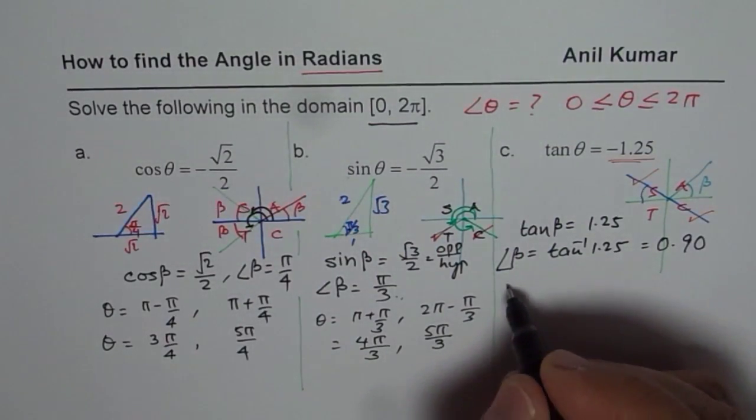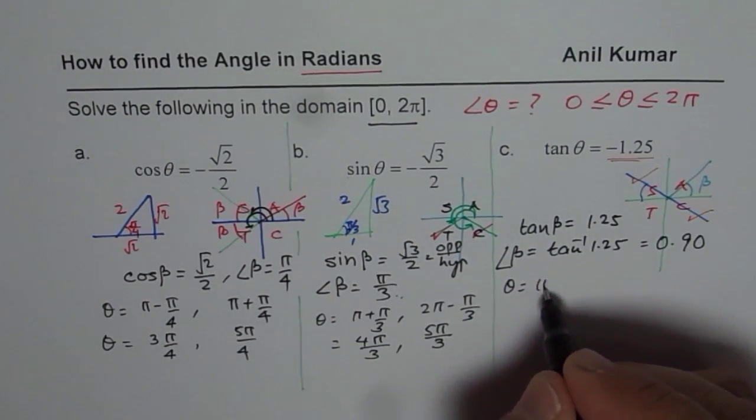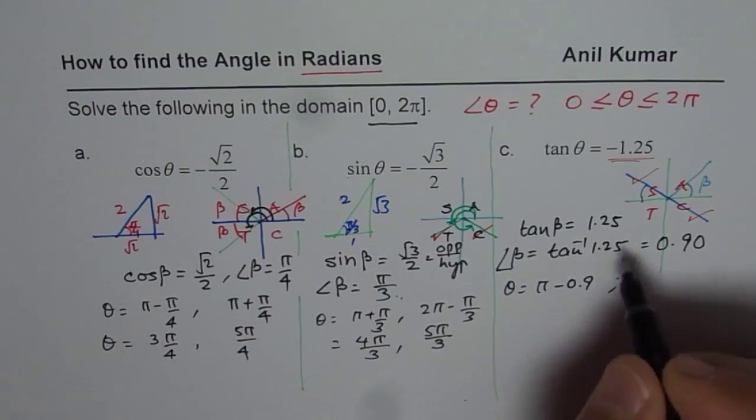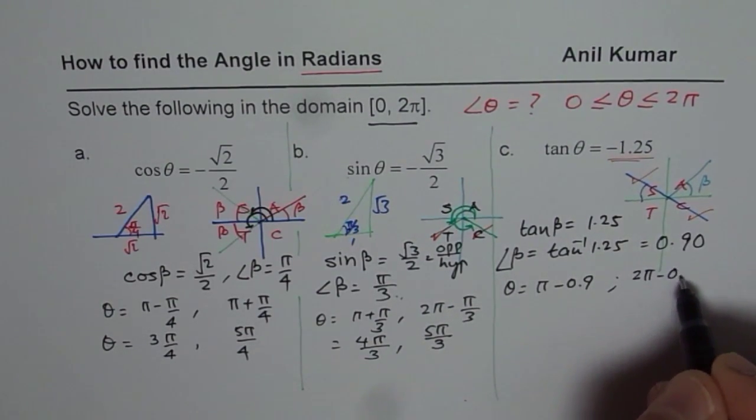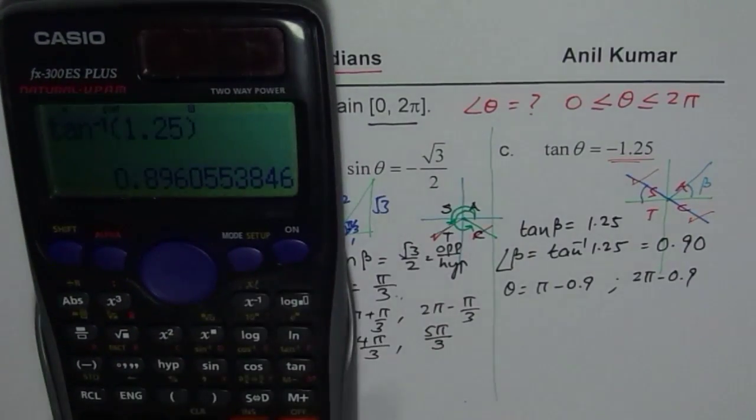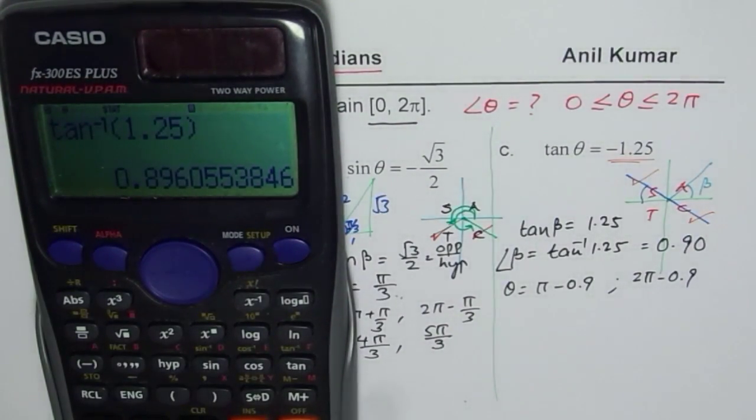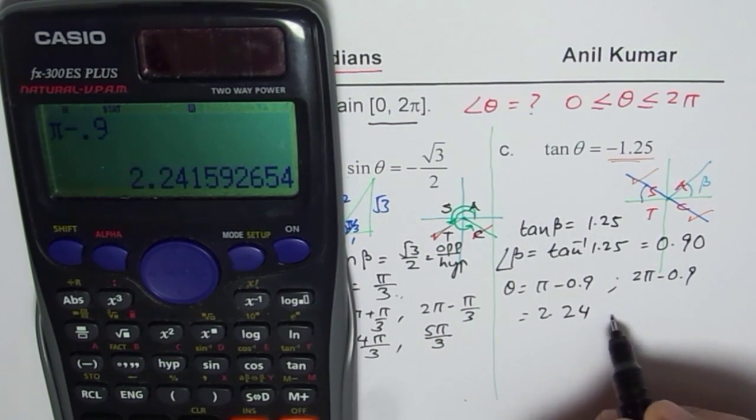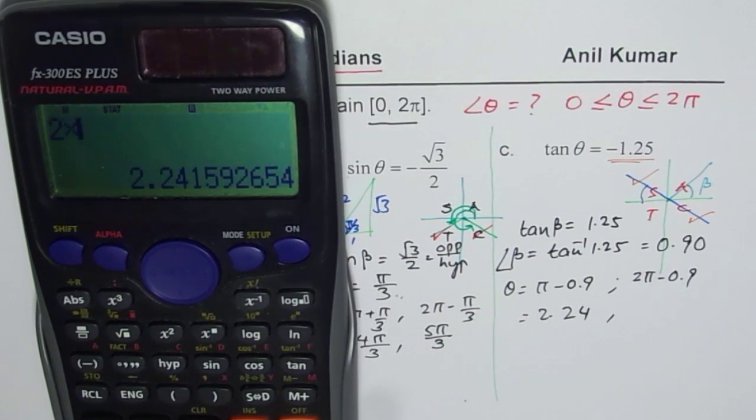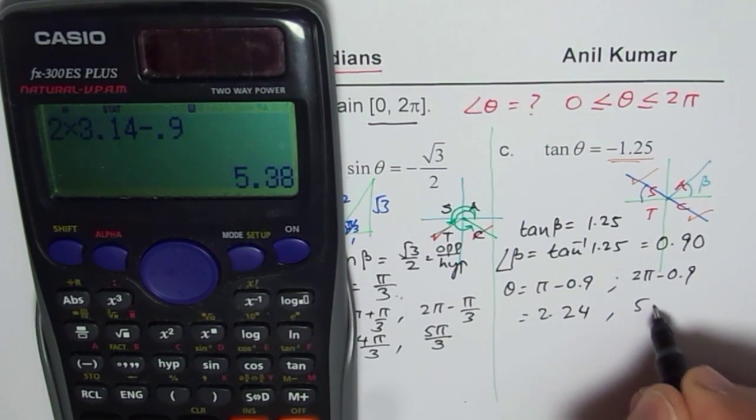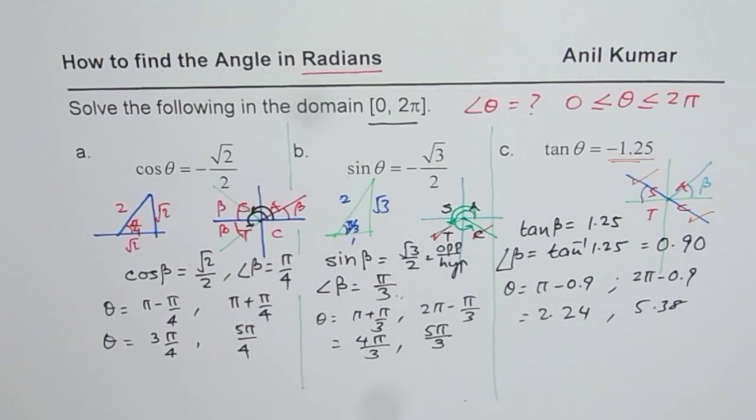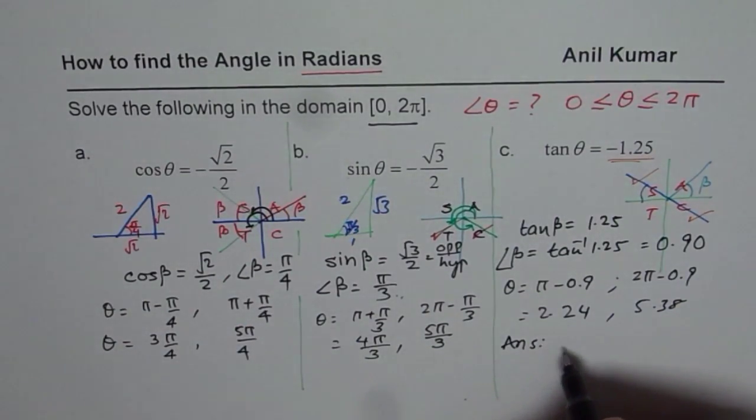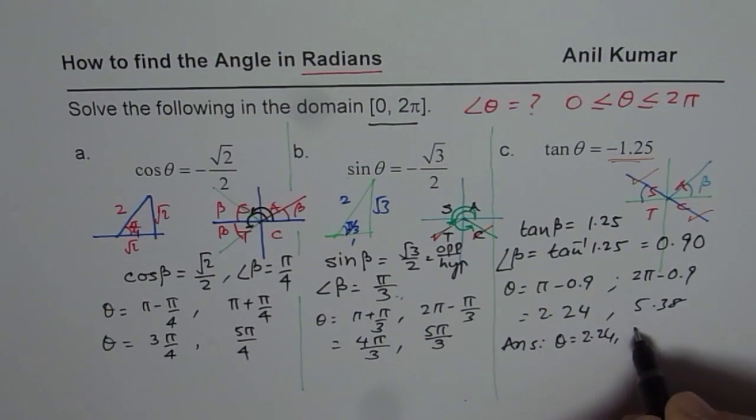But the principal angle which we are looking for is π - 0.9 or 2π - 0.9. So we will do shift, you can use 3.14 also, minus 0.9 equals to. So one value is 2.24. The other one is you can do 2 times 3.14 minus 0.9, 5.38. These are the two angles which you get. So your solution is θ = 2.24 or 5.38.